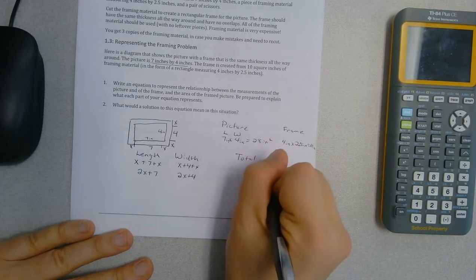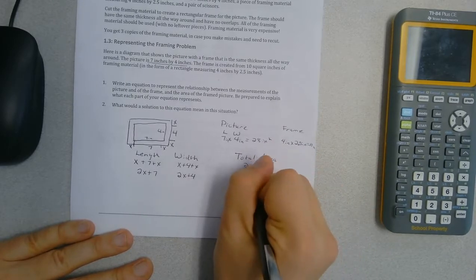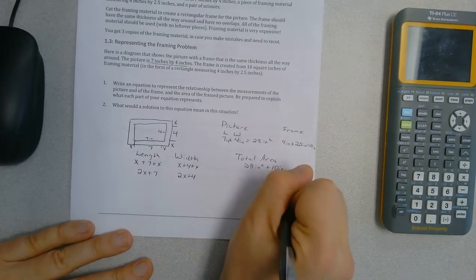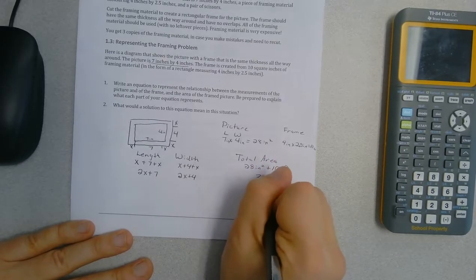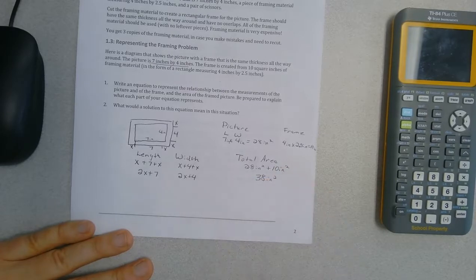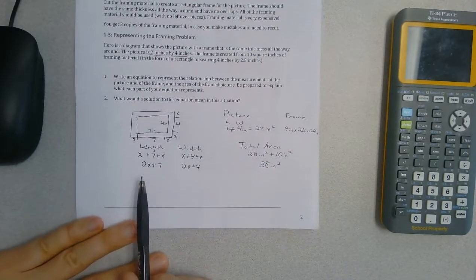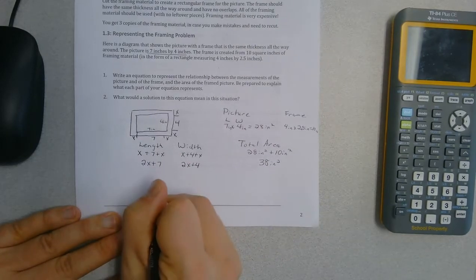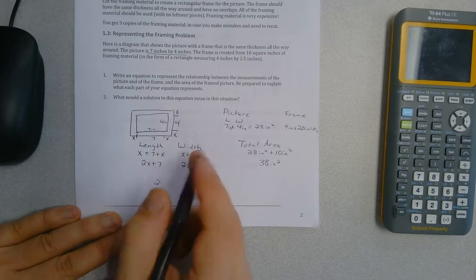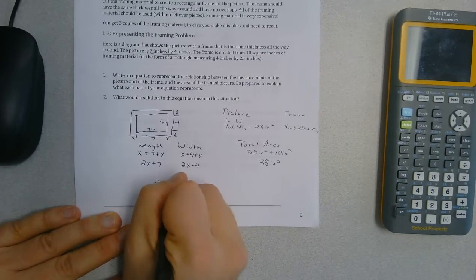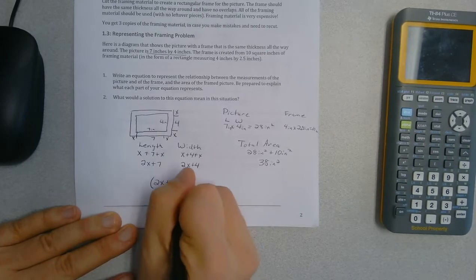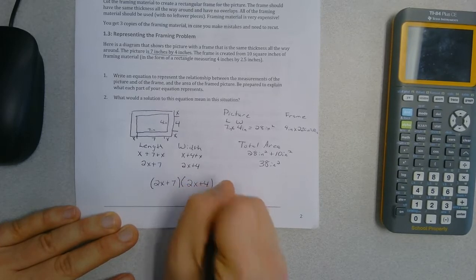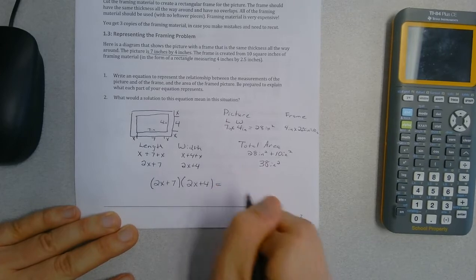So in getting an expression for the overall length and width, I could say well I multiply my length, 2x plus 7. I got to put that in parentheses to multiply my width, which is 2x plus 4, and then that gives me a total area of 38.